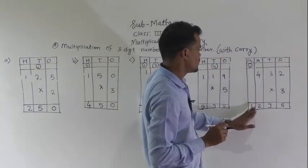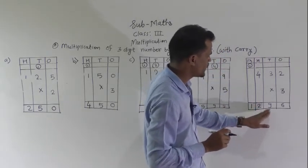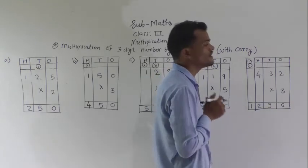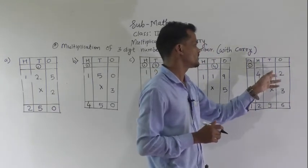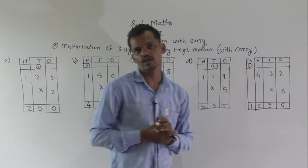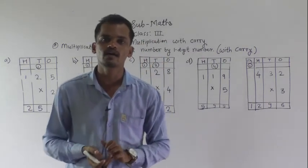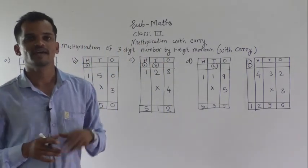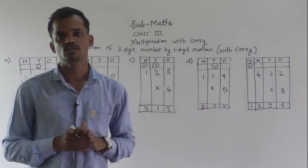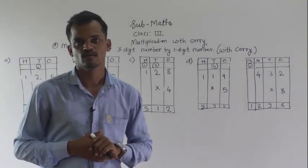So, 1296 is the product of 432 and 3. Today, we have learned how to multiply 3-digit number by 1-digit number with carrying. Thank you.